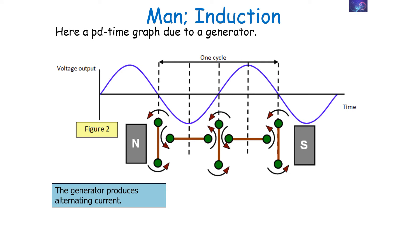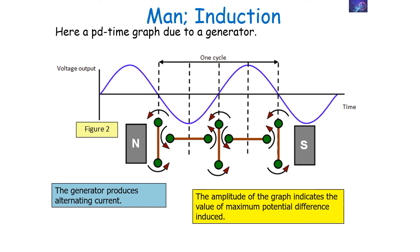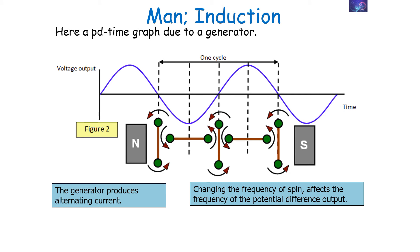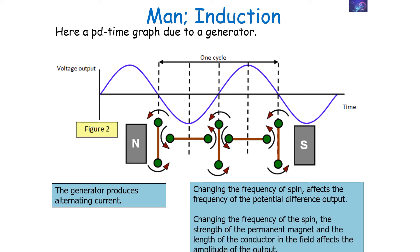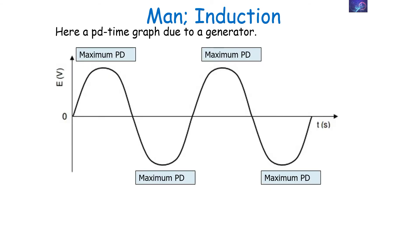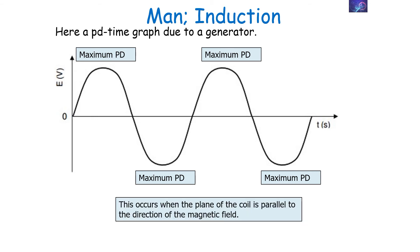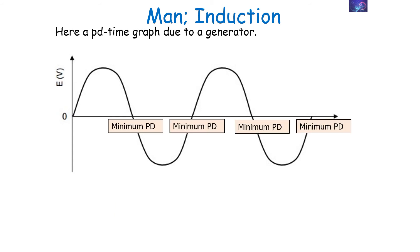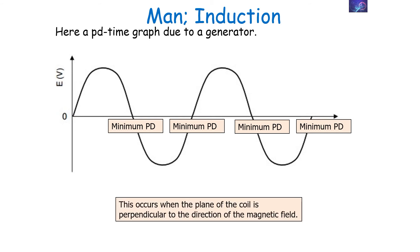Looking at the potential difference–time graph for a generator or alternator: we have alternating current. The amplitude of the graph indicates the value of maximum potential difference induced, and the number of waves per second indicates the frequency of the alternating potential difference. Changing the frequency of spin in your alternator affects the frequency of the PD output, whilst the strength of the permanent magnet and the length of the conductor in the field affects the amplitude — the maximum potential difference induced. Maximum values occur when the plane of the coil is parallel to the magnetic field, and minimum values occur when the plane of the coil is perpendicular to the magnetic field.